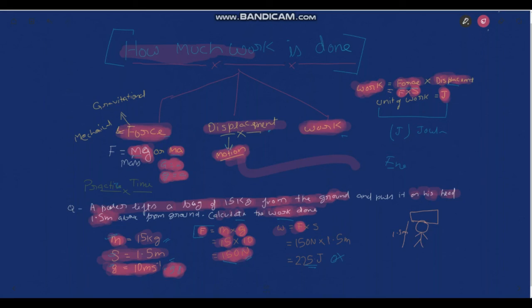Now work, now we can find the work because we have force, we have displacement, so we can find the work. What is work? Force into displacement, so it will be 150 newton, which is force here we have found it, and S is displacement which is 1.5 above the ground. So when we will multiply it, we will get to know that 225 joule is work done.